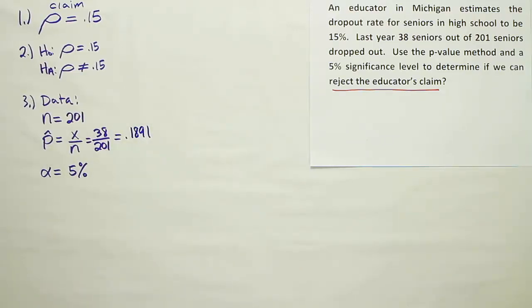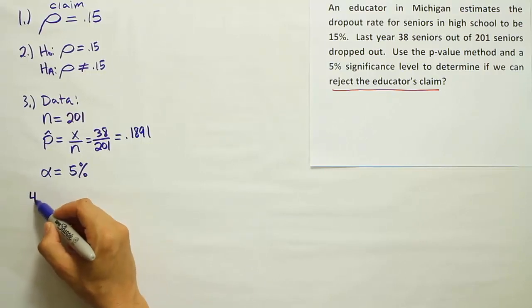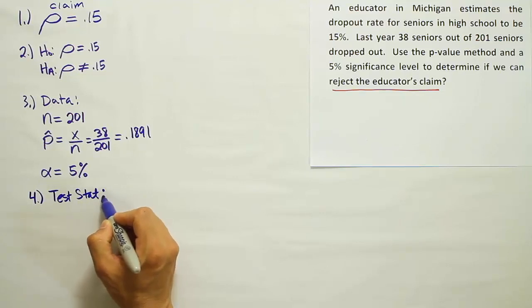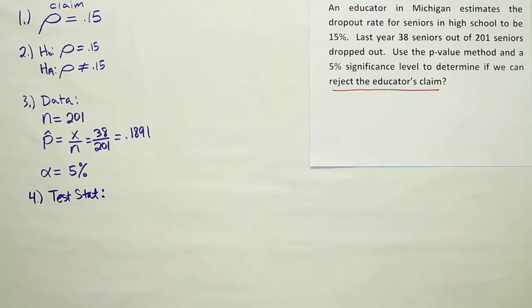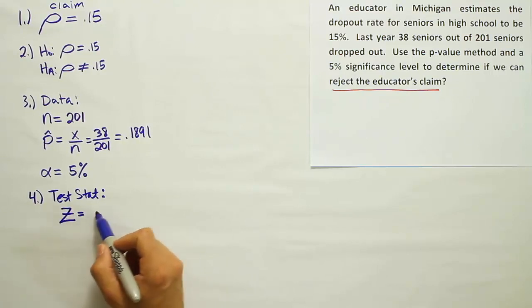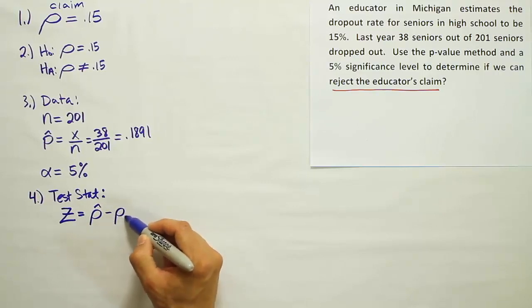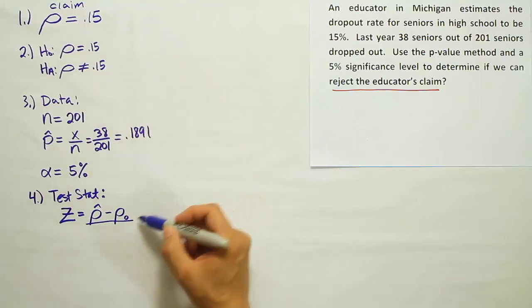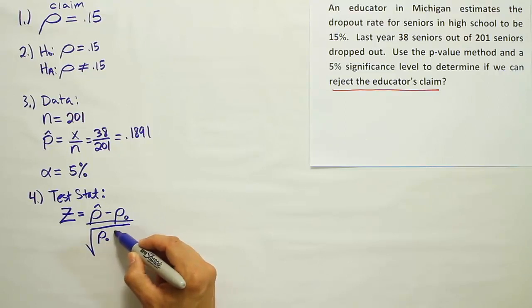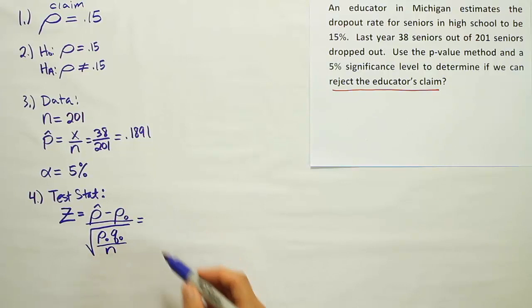Now our next step, step four, is to calculate our test statistic. To calculate the test statistic, what you want to do is to first come up with a formula. For these proportion problems, it's going to be Z is equal to P-hat minus rho-naught. This is the number you find in H0, in other words, divided by the square root of rho-naught q-naught divided by n.